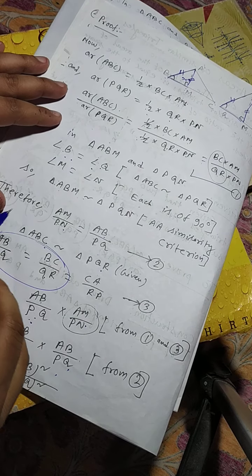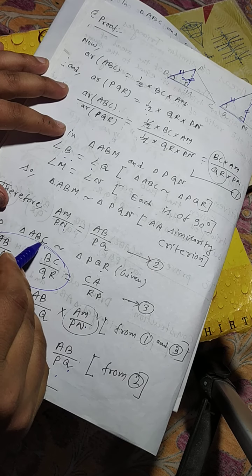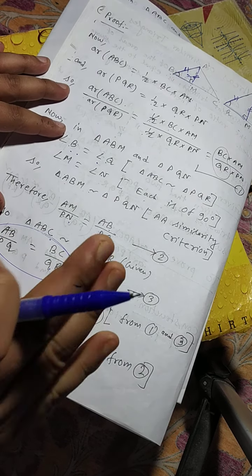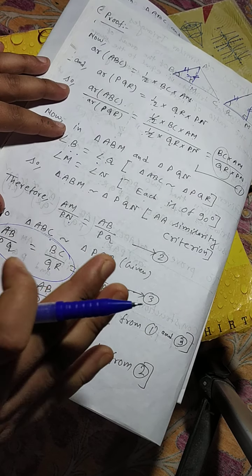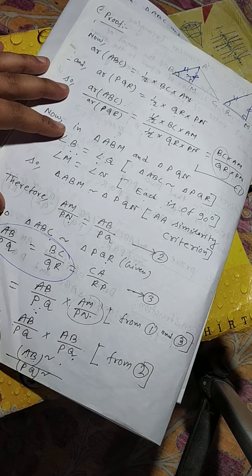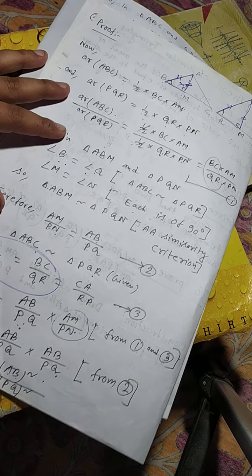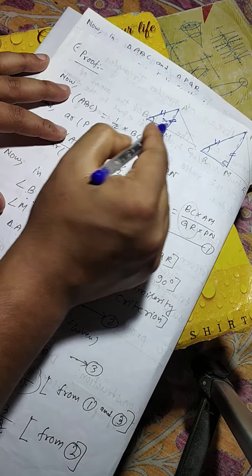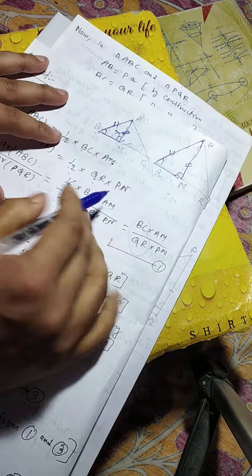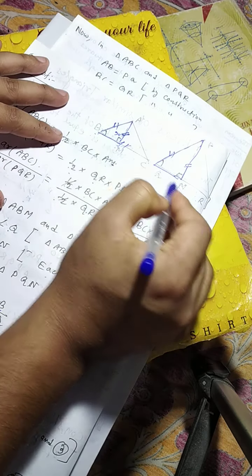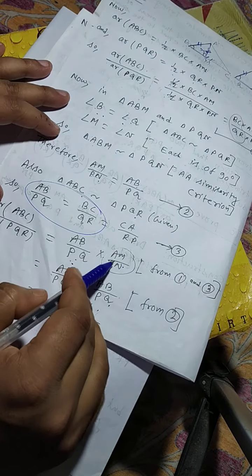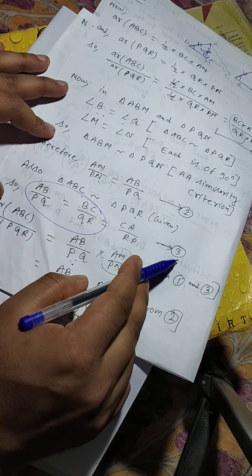Also, triangle ABC is similar to triangle PQR as given. So their corresponding sides are in the same ratio: AB by PQ equals BC by QR equals CA by RP. This is equation number 3.